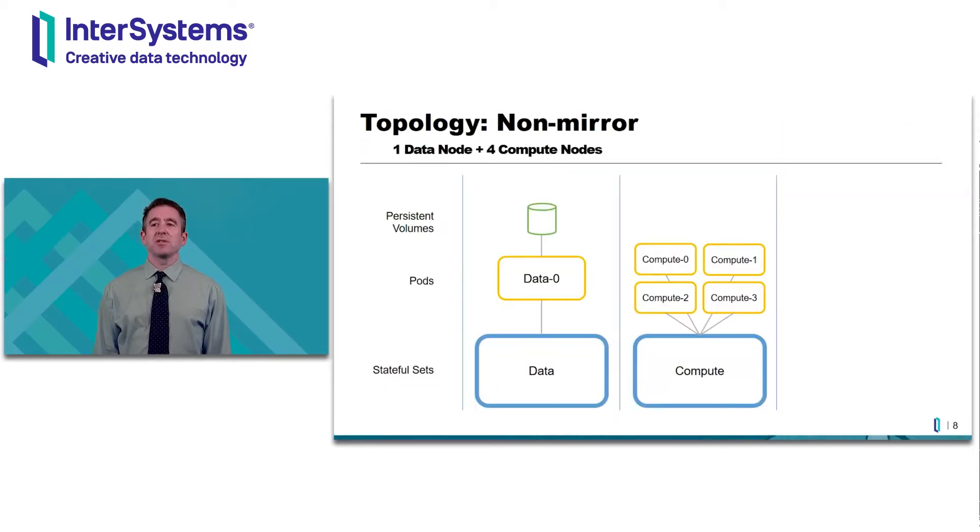This cluster consists of five IRIS instances, one data node and four compute nodes. The data node is managed by one stateful set, and the compute nodes are managed by another. The IRIS application itself runs within the pods, with one instance per pod. The data pod has a persistent volume associated with it. This volume survives restart or replacement of the data pod and will always reattach to the same pod. Compute nodes, also known as ECP clients or application servers, are completely optional. I included them just to make the slide less boring. Note that this diagram is oversimplified.